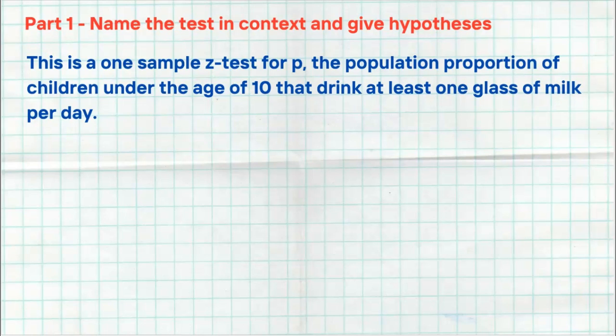So what we want to do here is we want to say, this is a one sample Z test for P. Now we're actually defining what P is in context to this problem, the proportion of children under the age of 10 that drink at least one glass of milk. So again, two really important things you got to have there is the name of the test, and then you're defining what P is in context.